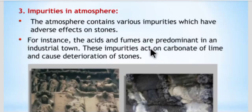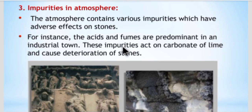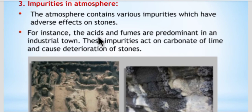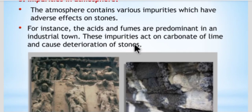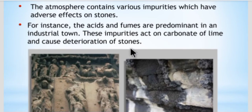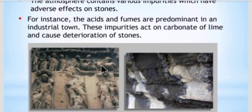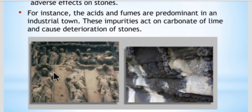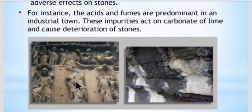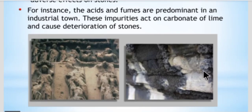The third reason is impurities in the atmosphere. The atmosphere contains impurities such as acids — oxygen, carbon dioxide, and other acids are present. These acids act on the stone surface and make the stone unfit to use as a construction material, causing decay. The pictures show stones affected by atmospheric acids, with visible patches already deteriorated.